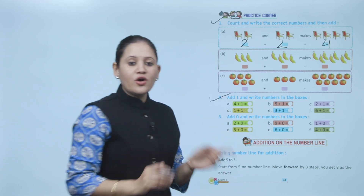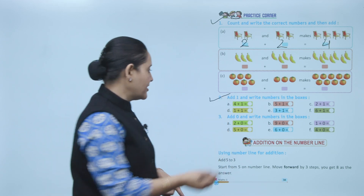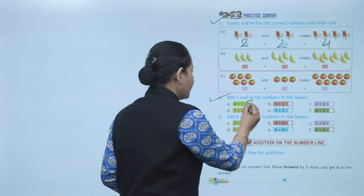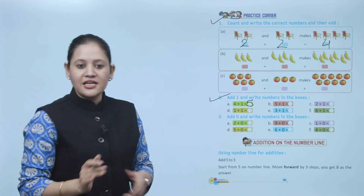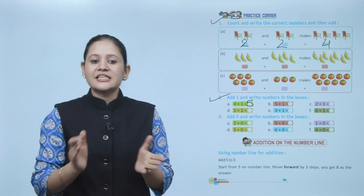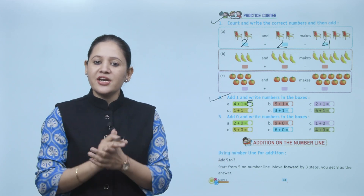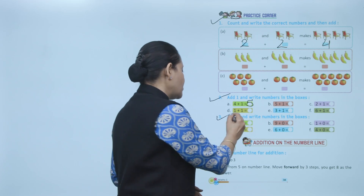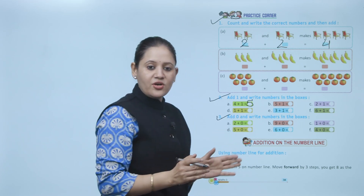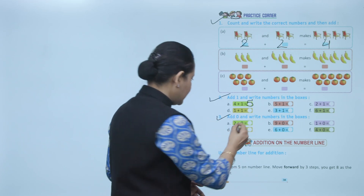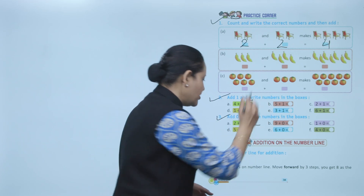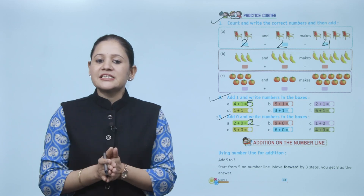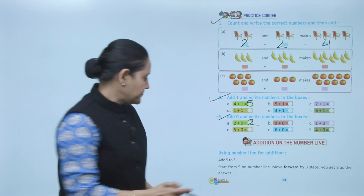Four plus one equals five. Next, add zero and write the number in the boxes. Two plus zero — the number itself — that is number two. Next is addition on the number line.